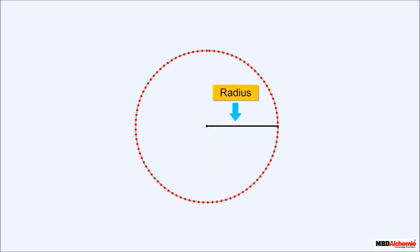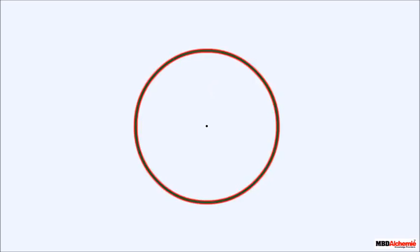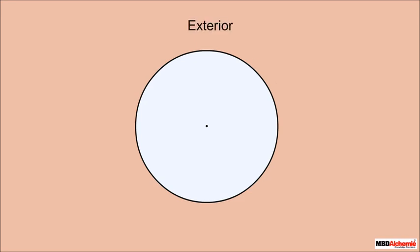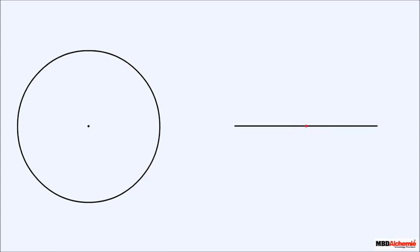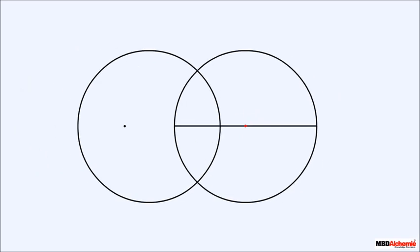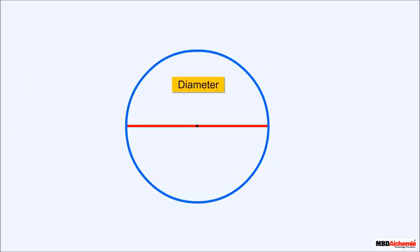This circle divides the region into three parts: the exterior of the circle, the interior of the circle, and on the circle. Now if we take a line segment of length twice the radius and fix it from its middle point at the same center and rotate, we get the same circle. This line segment is called a diameter, and a diameter equals two times the radius.